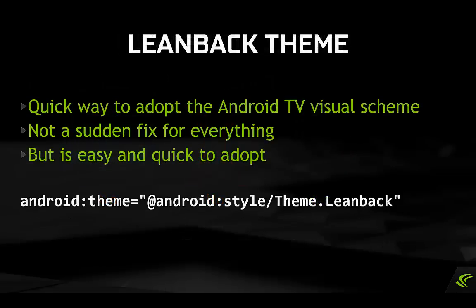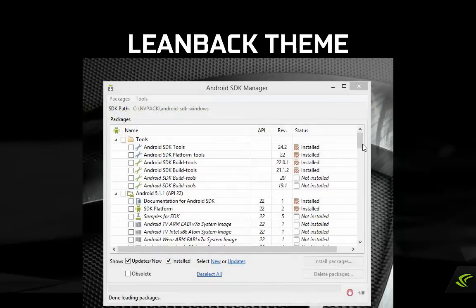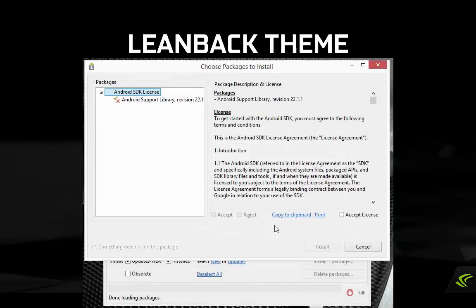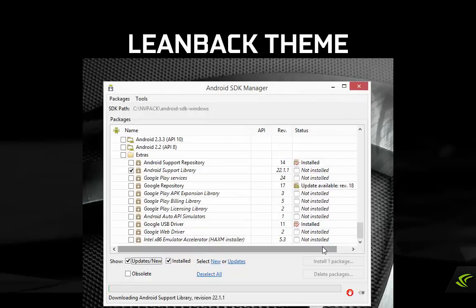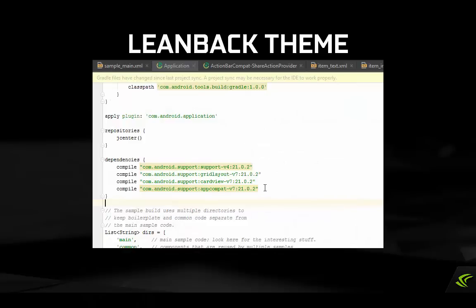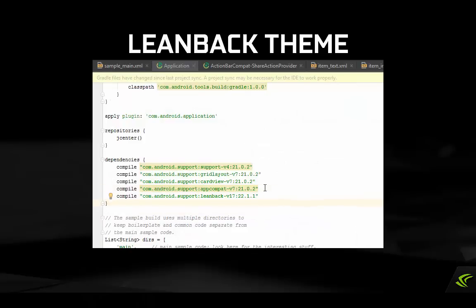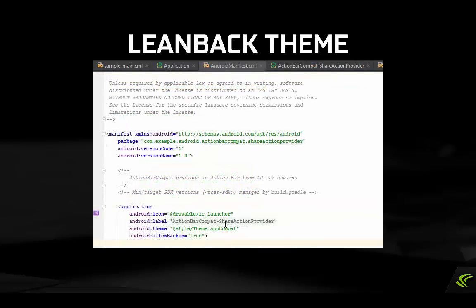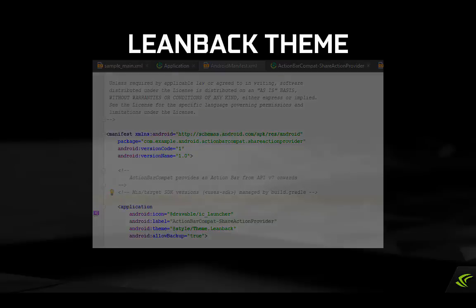If you already use themes for your UI and don't have too many custom items, you can quickly try Android's existing TV-focused theme, theme.leanback. In order to use this, you'll need to install the Android support libraries from the Android SDK manager. Once you've done that, you compile the support library called the v17-leanback library to gain access to this theme. Apply it to your Android TV app activities. This can make it easy to create 100% TV-ready UIs from your existing UIs. It isn't a cure-all, especially if you use a lot of custom colors and options, but it's a very easy thing to try.